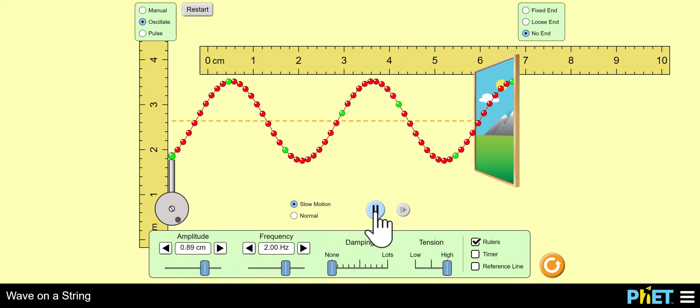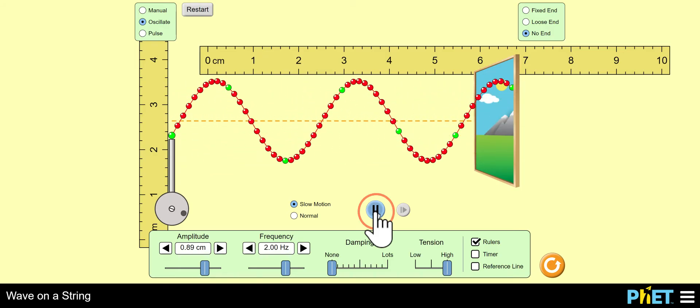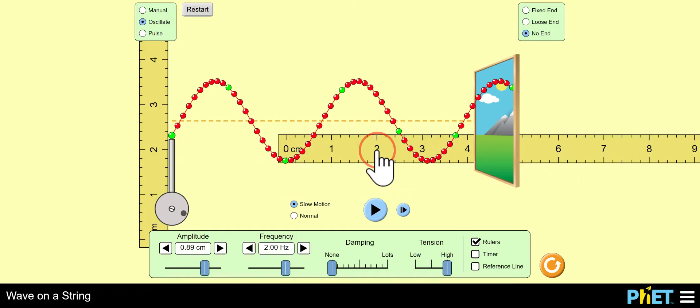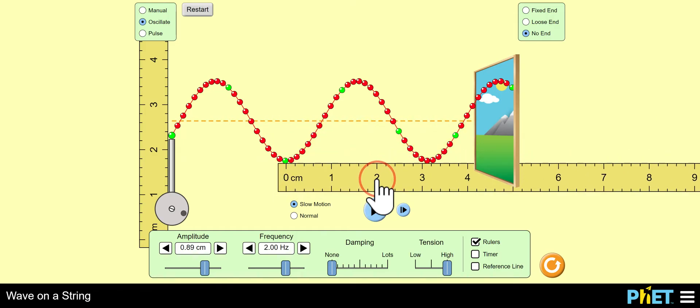And this pause button is going to be critical when measuring the wavelength. So here, trough to trough, I could do a trough to trough. This is a little over three. Can you see that? Three centimeters, that is.